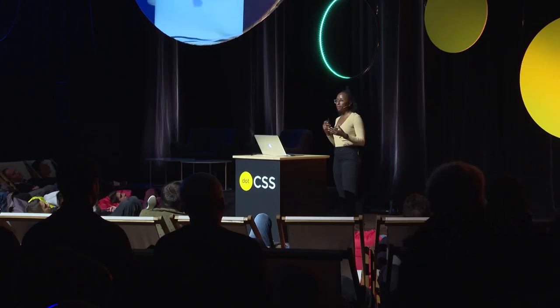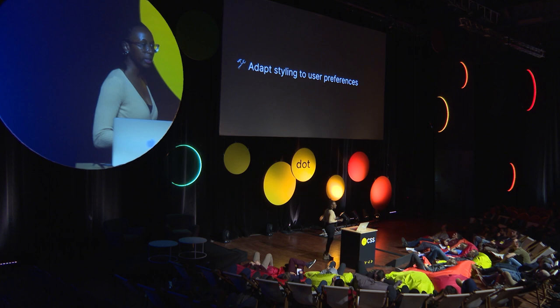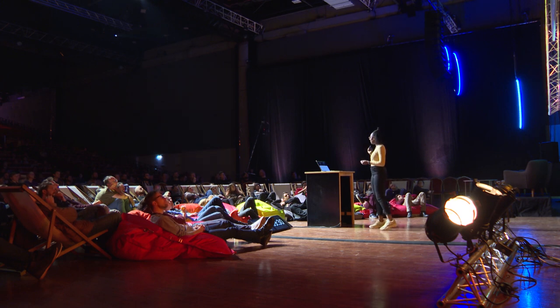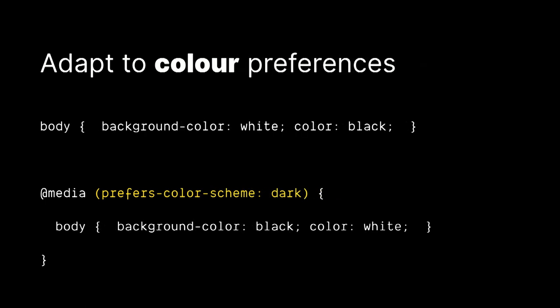Then we have adapting your styling to user preferences. If everyone is online, it's going to be really difficult to make one experience that's suitable for absolutely everybody and everybody's preferences. That's where preference-based media queries come in. We've seen things like this where we can change the experience based on animation preferences — so if someone prefers reduced motion, we can reduce or just completely remove any animation.